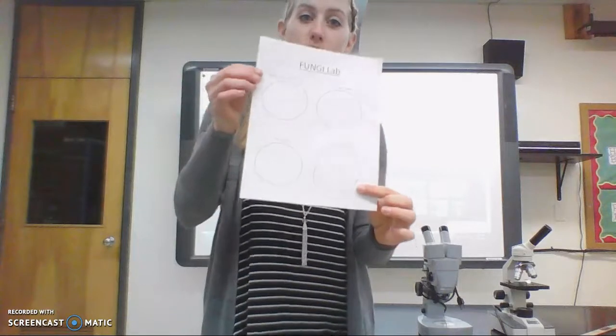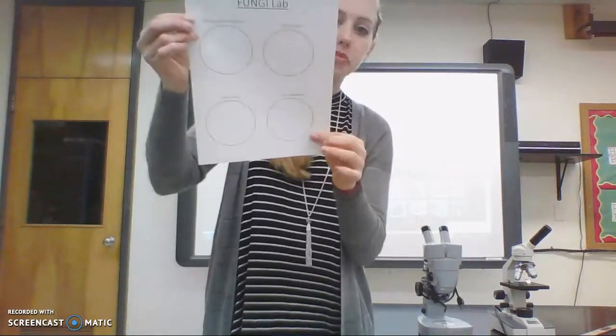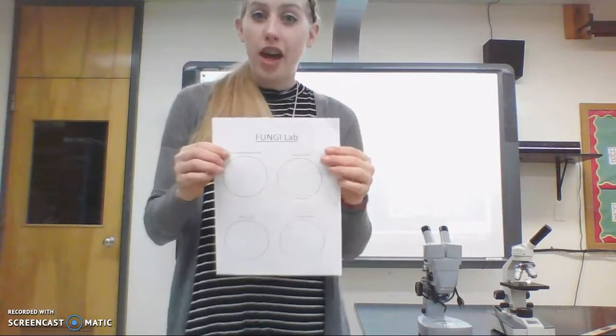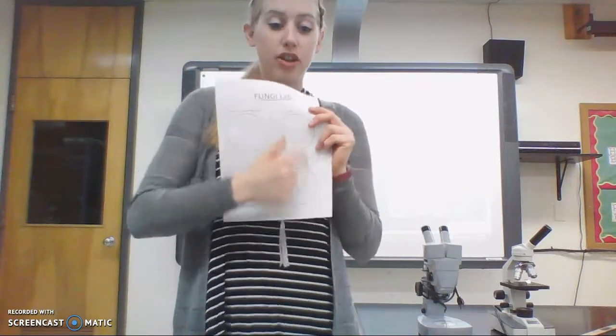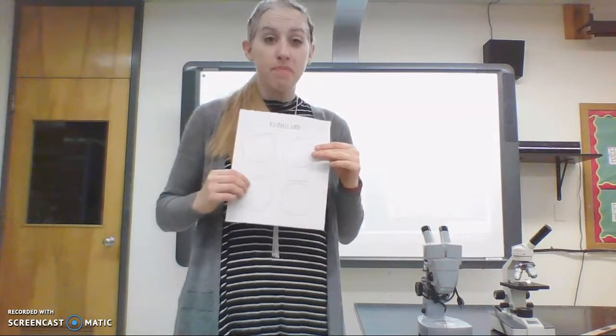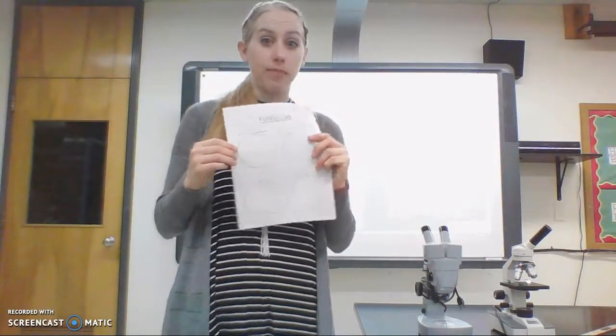This sheet that has the circles on it is going to be the sheet that you draw on. When we're drawing pictures, I don't want chicken scratch — I don't want a couple of lines or dots. You need to be detailed. I don't care if you're a good artist; you just have to put in effort to show me that you can draw some of these things.